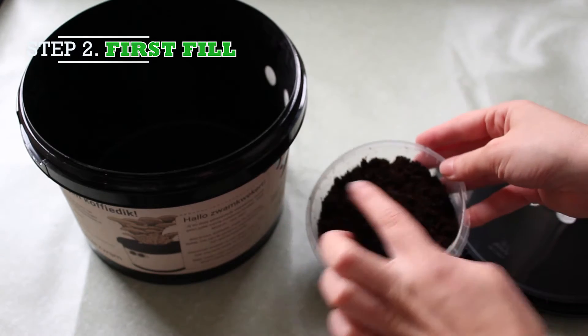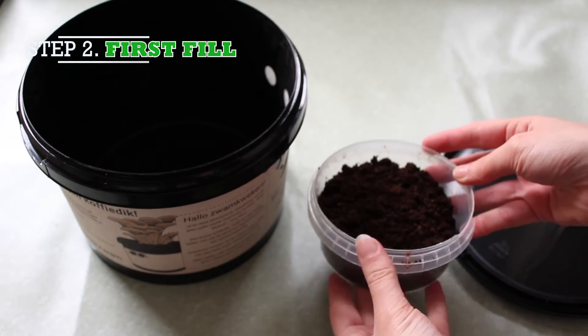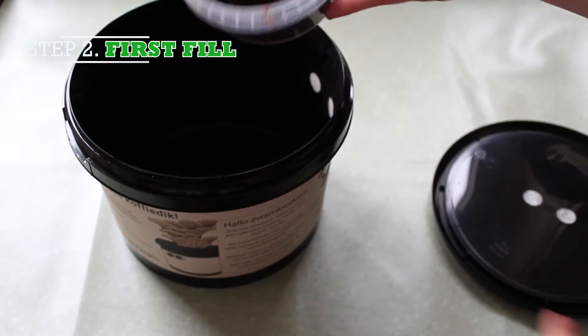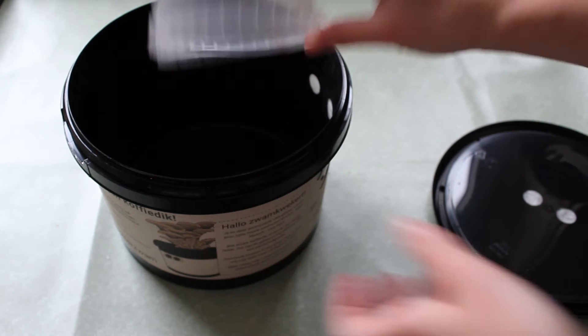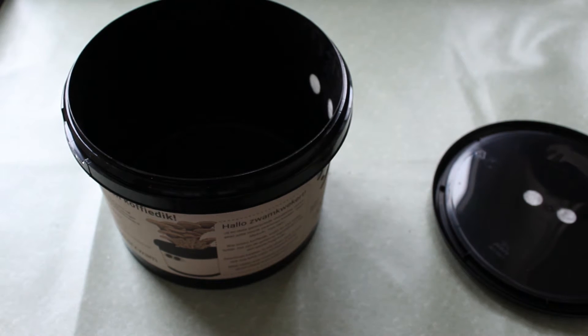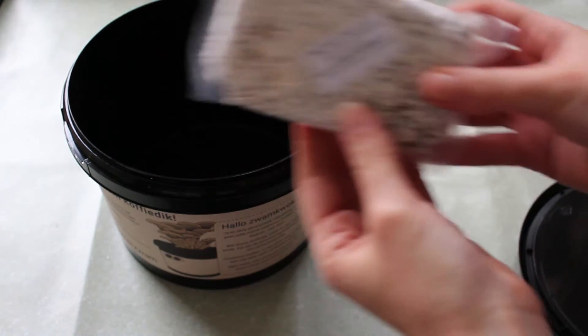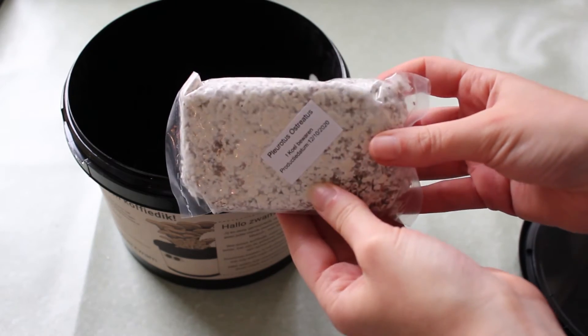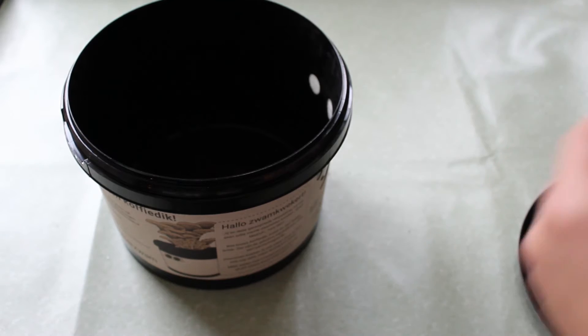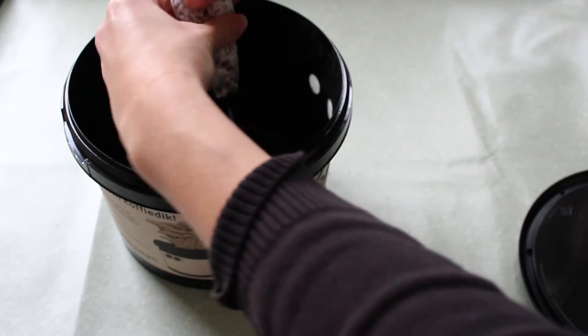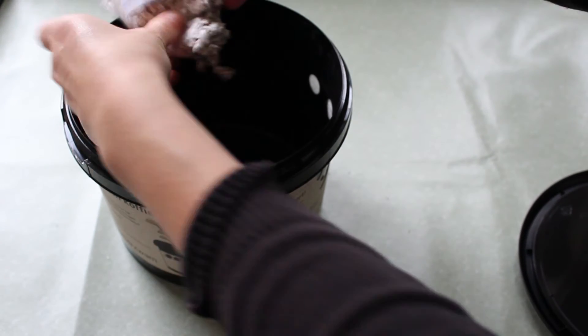Add the coffee grounds. The coffee grounds need to be moist and the color of dark chocolate. Mix the bag of oyster mushroom spawn with around the same amount of coffee grounds. It's quite difficult to get it out of the bag, but that's fine.